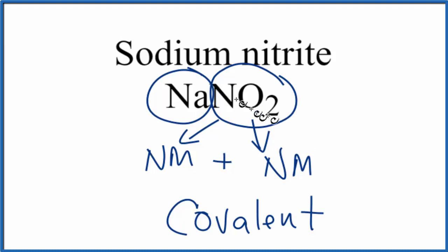This is Dr. B answering the question whether sodium nitrite is ionic or covalent. We consider the entire compound to be ionic, but within the compound here, we have nitrogen and oxygen, those bonds are covalent. This is Dr. B, and thanks for watching.